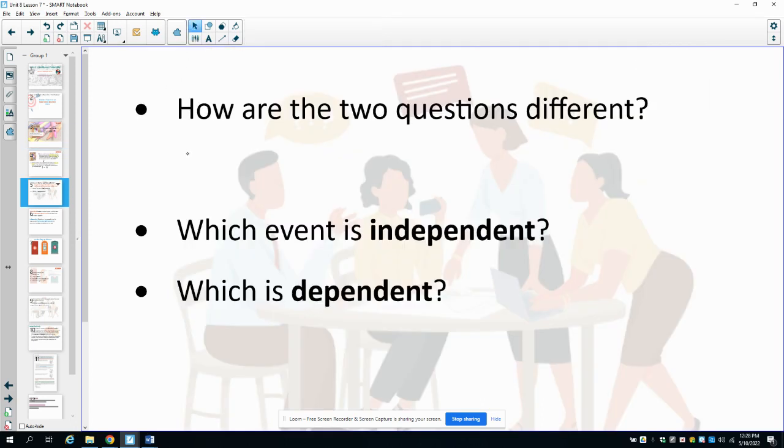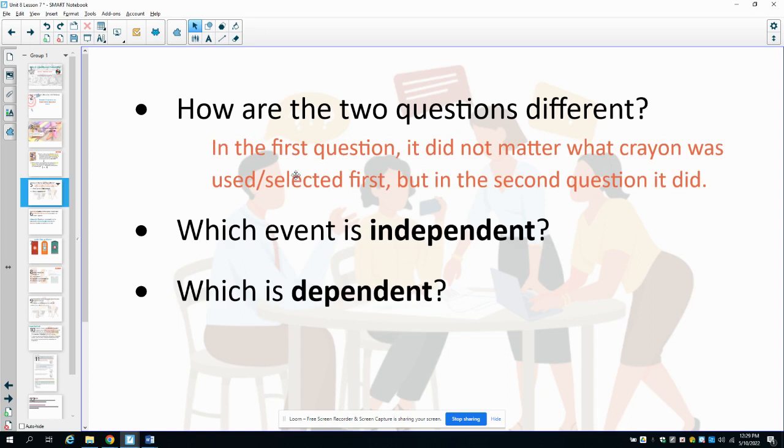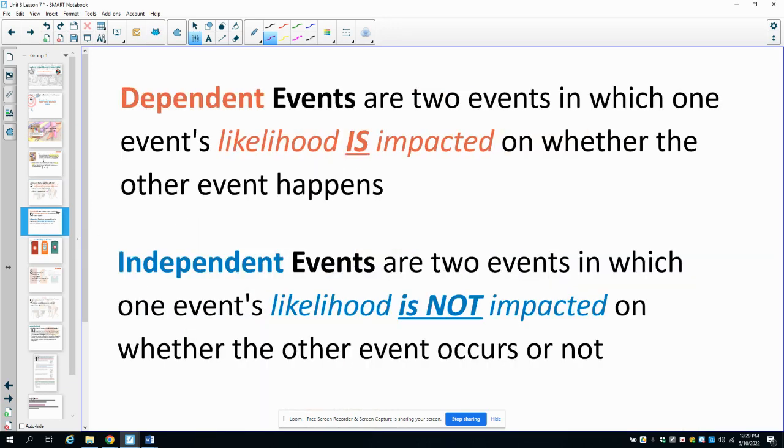So what's the difference in these two questions? The difference is in question number one, the first selection did not impact the second selection. But in the second question, it did because it mattered because the person walked away with the crayon and did not replace it into the bag. So which event is considered independent and which one is considered dependent? The first one is independent since the two selections did not impact each other. And the second one is considered dependent since it matters what happened in the first selection to determine the probability of the second.